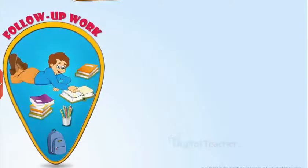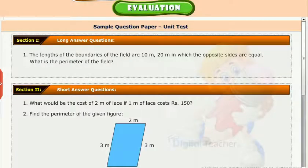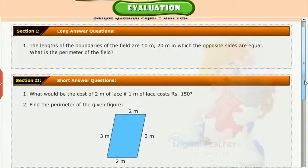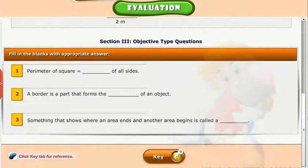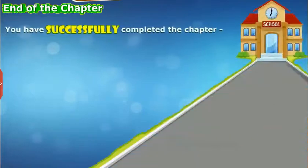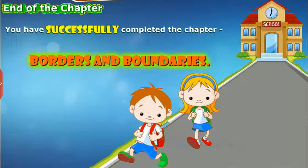Follow up work: find the perimeter of a square, rectangle and a triangle. Calculate the perimeter of your friend's fields. Test your understanding of the chapter by taking the mock unit test. You have successfully completed the chapter, borders and boundaries.